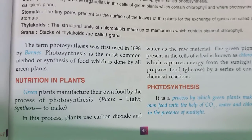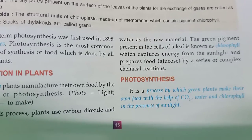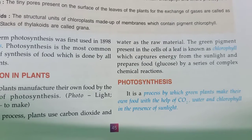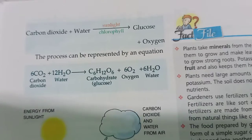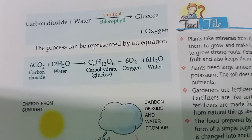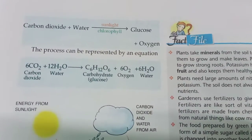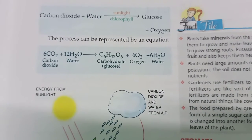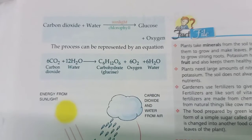Now we come to the process of photosynthesis. It is the process by which green plants make their own food with the help of carbon dioxide, water, and chlorophyll in the presence of sunlight. Here is the equation: carbon dioxide plus water, in the presence of sunlight and chlorophyll, produces glucose and oxygen. The chemical equation is: 6CO₂ + 12H₂O → C₆H₁₂O₆ + 6O₂ + 6H₂O.